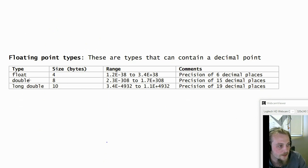So we have float, double, and long double. We can see the range here. So we've got 1.2 times 10 to the power negative 38 to 3.4 times 10 to the positive 38. And we've got a precision of six decimal places. So here, the type is only accurate to six decimal places.